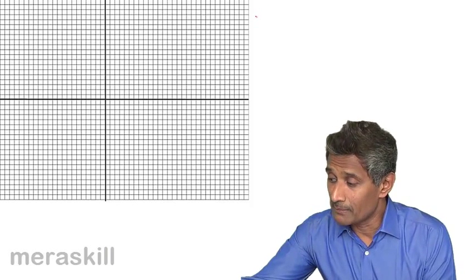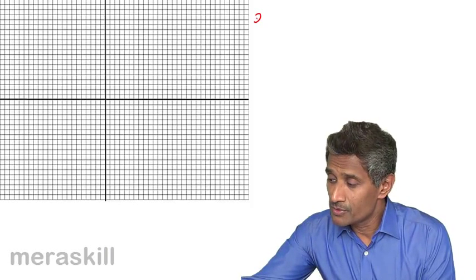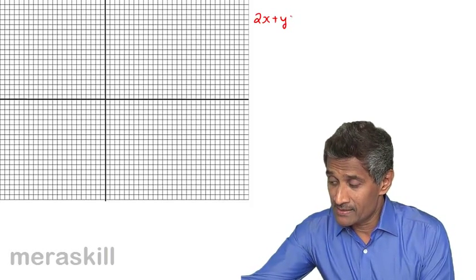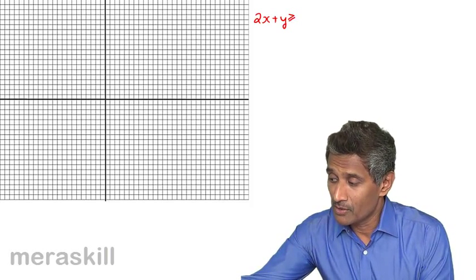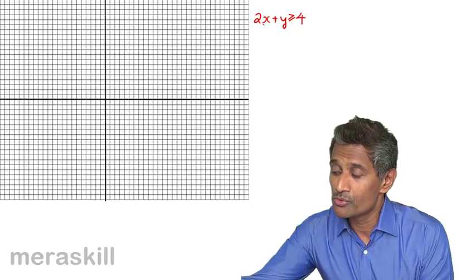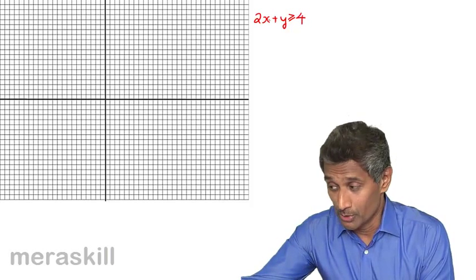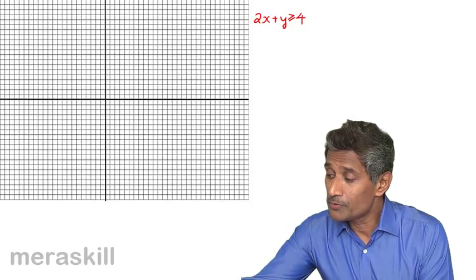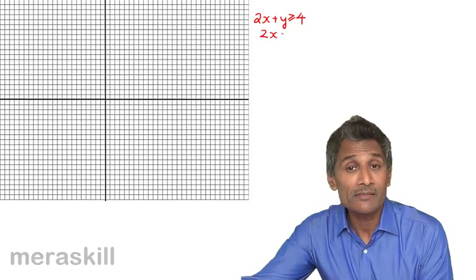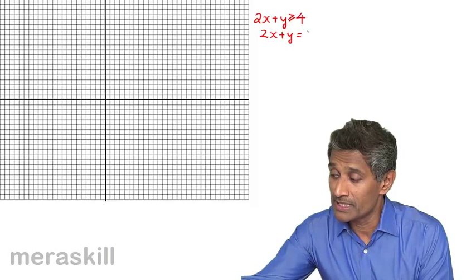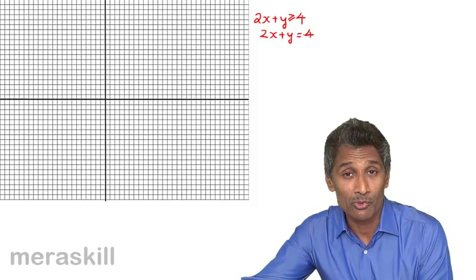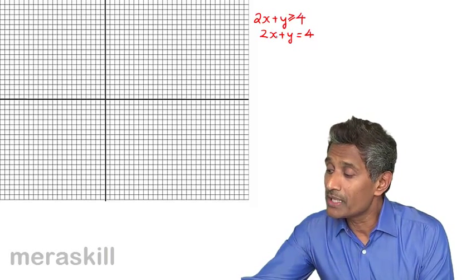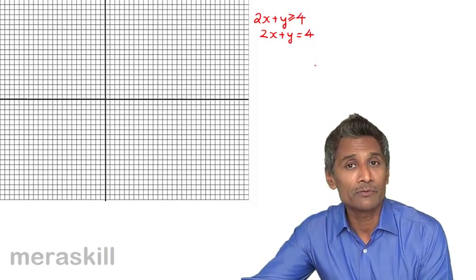Let's take this example: 2x plus y is greater than or equal to 4. I want to plot this particular region. To plot this region, I need to first plot the line that forms the boundary of the region — like how we draw political boundaries of countries, we need to draw a boundary for this region too. So we consider 2x plus y is equal to 4.